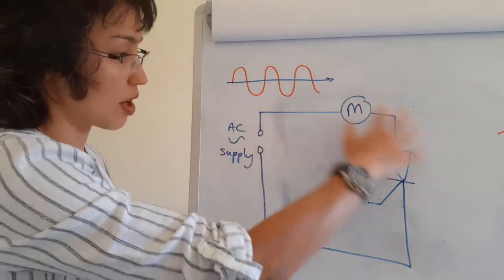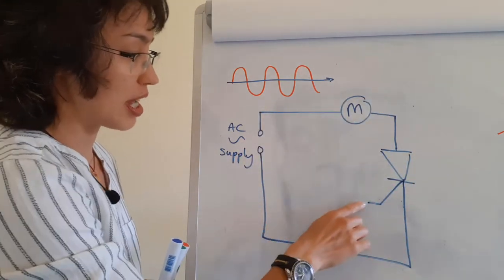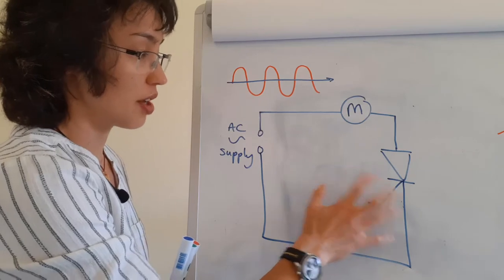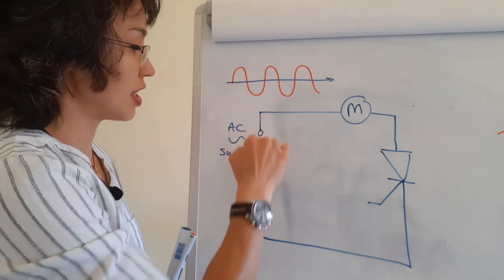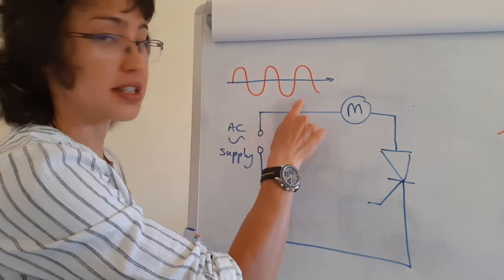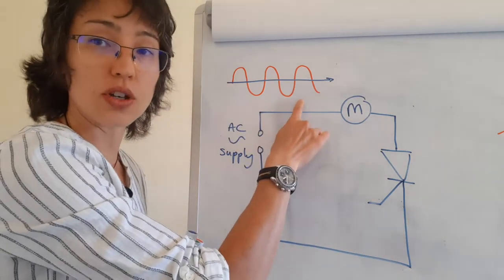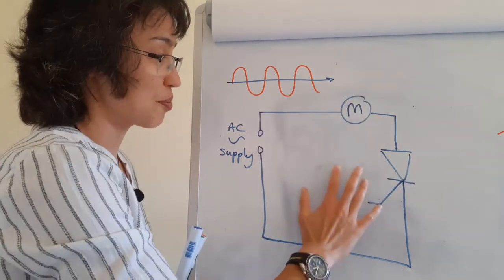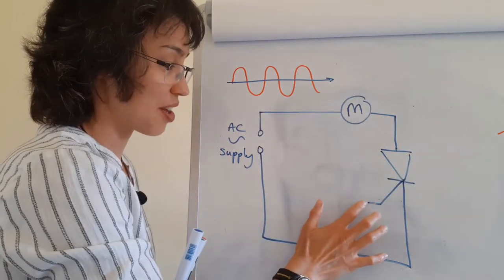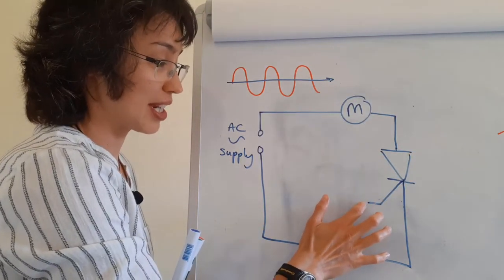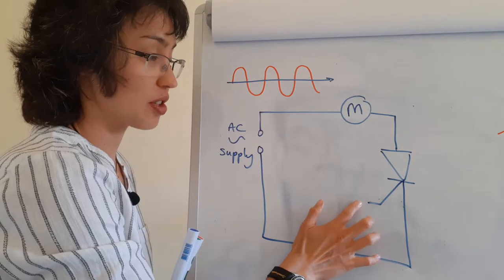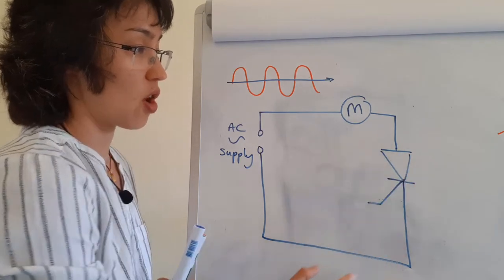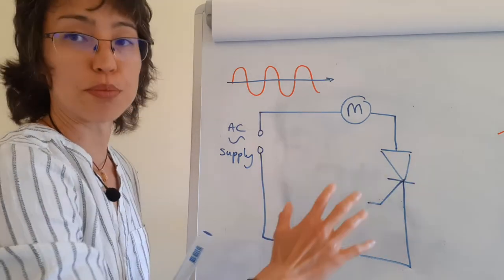So I've got my circuit here, but unless I turn my gate on, nothing's going to happen. So even if I have my AC supply turned on, but there's nothing on my gate — so there's no gate voltage applied — then the device is off and I just get blocking.